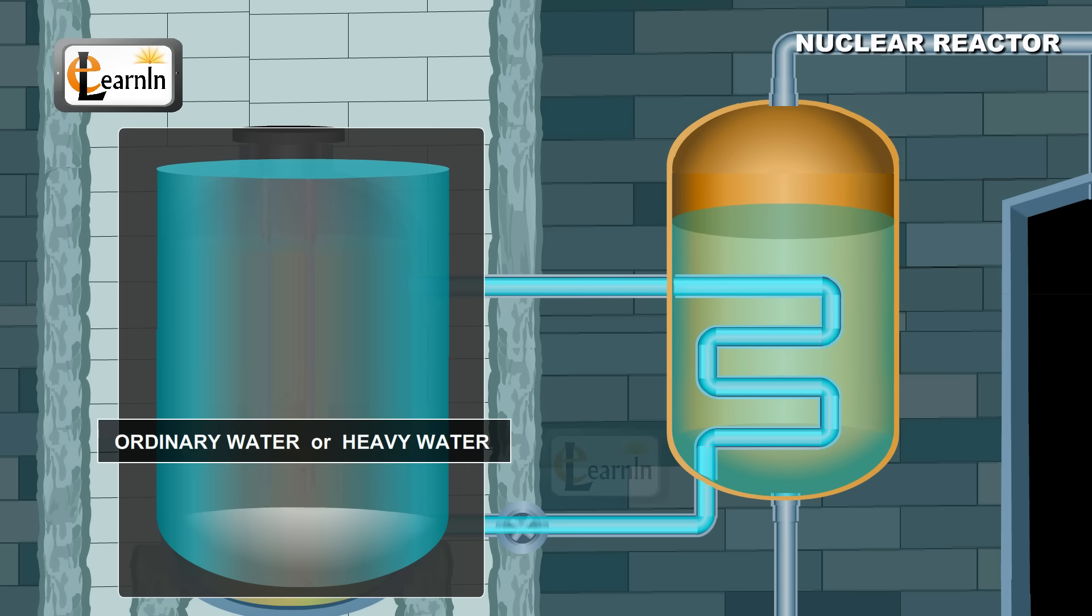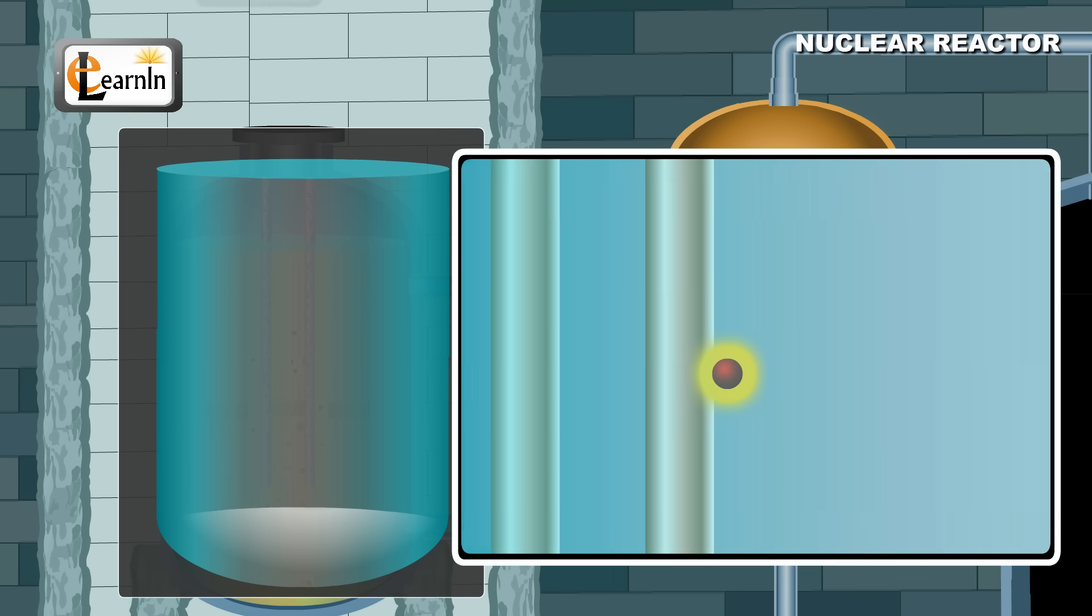Commonly, ordinary or heavy water is used as a moderator in nuclear reactors because of the deuterons present in them, which are capable of slowing down the neutron speed.